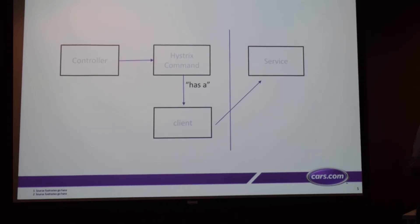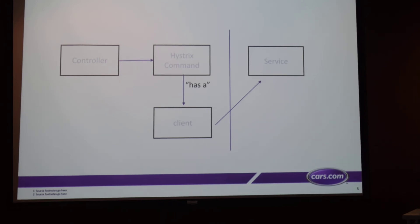One thing to note is there's some overhead: each Hystrix command is a new object and its own thread, so there's thread allocation and object creation with garbage collection. That's the one drawback to consider. But given Netflix and how they use it, the library is implemented in a way that it doesn't have issues with that — they tune it so it's not a problem.